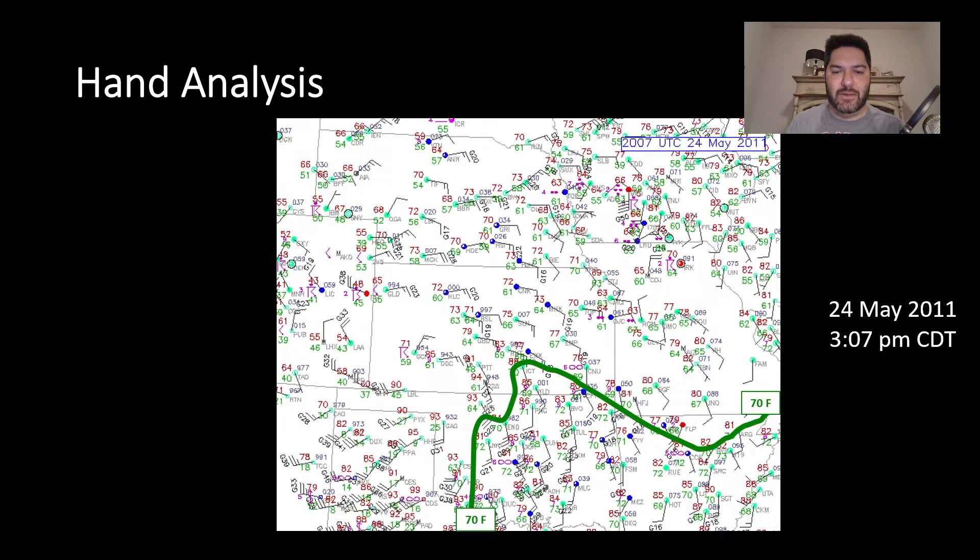So what that means is you'll notice that here in central Oklahoma, let me just point out this station right here, has a 72-degree dew point. You see that greenish color there. And so basically to the right of this line that I drew in, you have dew points in the lower 70s.